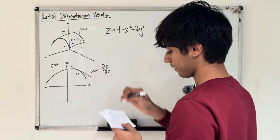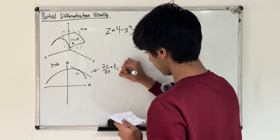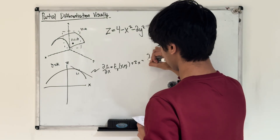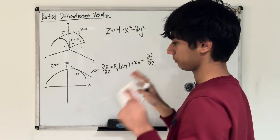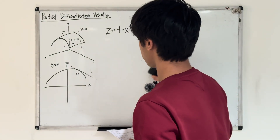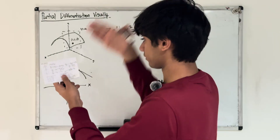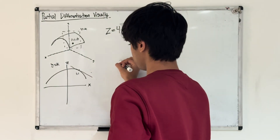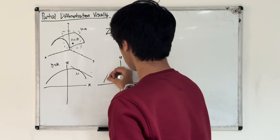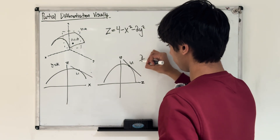Instead of d, we use ∂ (del). Other notation includes f sub x, z sub x, and ∂f/∂x. Similarly for the y derivative, we do the same thing: we cut it in terms of x equals k, so we do another slice parallel to yz. We get a graph that looks pretty similar, and then we have a slope at point (1,1), and that's our partial with respect to y.